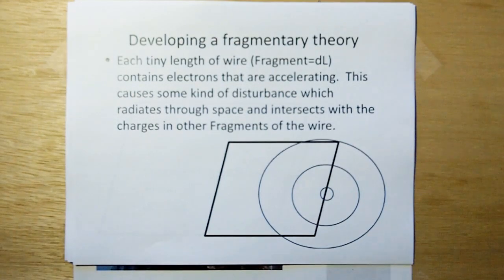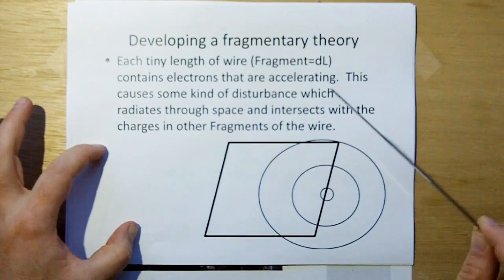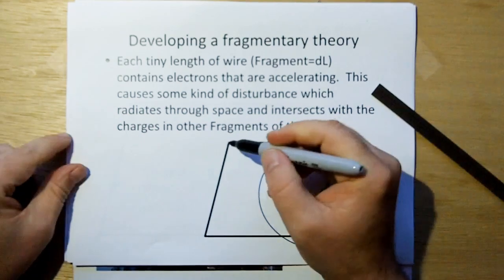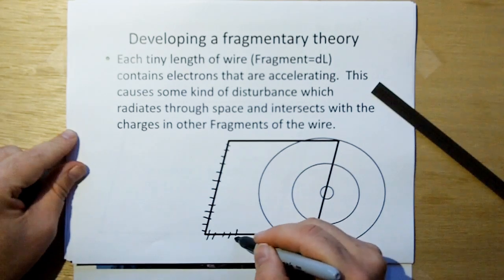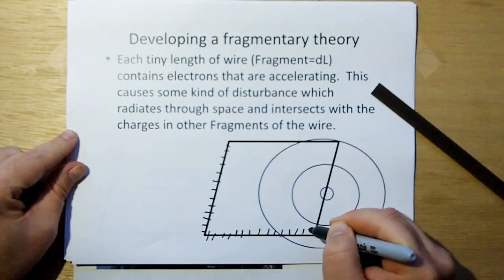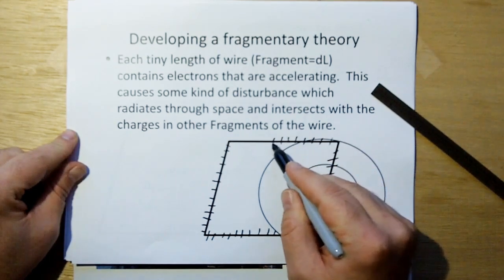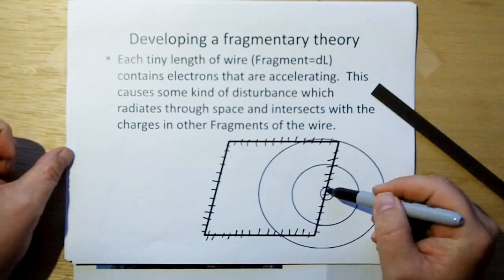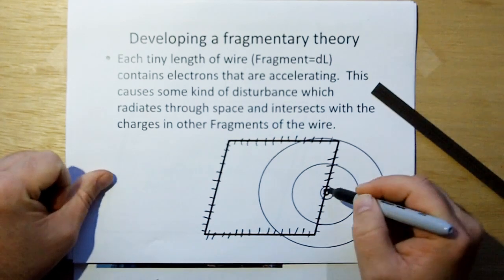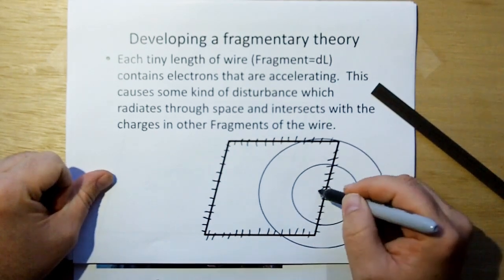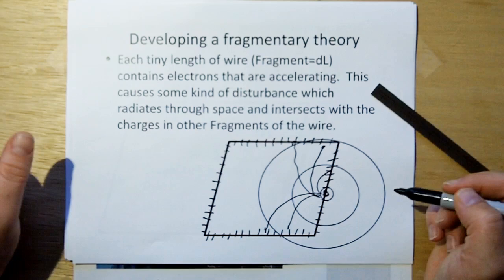So what we're going to do with the rhombus is because the charges in the loop of wire are going to be the things that emit the field into space. And what we can do is divide the entire length of the rhombus into tiny fragments, I'm going to call them, differential lengths of wire. And I'm going to call them fragments for shorthand notation. And then, we know that as each fragment of wire, the current in each fragment, the charges in each fragment of wire accelerate, that's going to emit some kind of disturbance into space which is going to couple with the other parts of the wire.